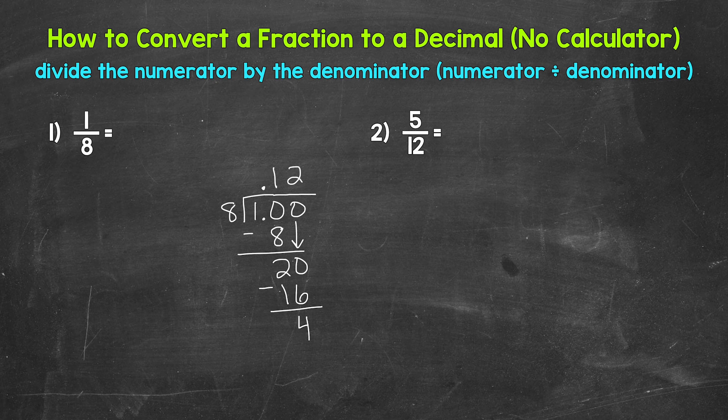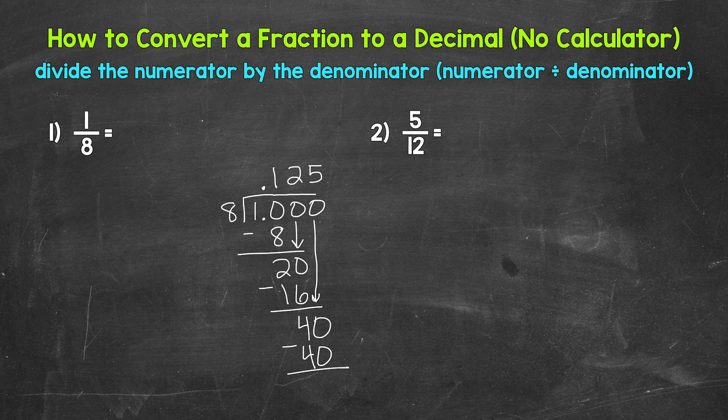We still don't have that clean cut zero there at the bottom. So let's use another zero that we can bring down. So now we have 40, 40 divided by eight. How many whole groups of eight in 40? Well, five, and that hits 40 exactly. Five times eight is 40. Subtract 40 minus 40 is zero. So now we have that clean cut zero there at the bottom. We went all the way over within our division problem, and we have that zero at the bottom. So we are done.